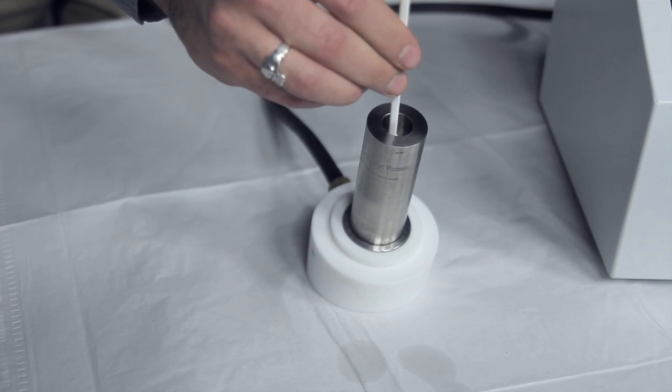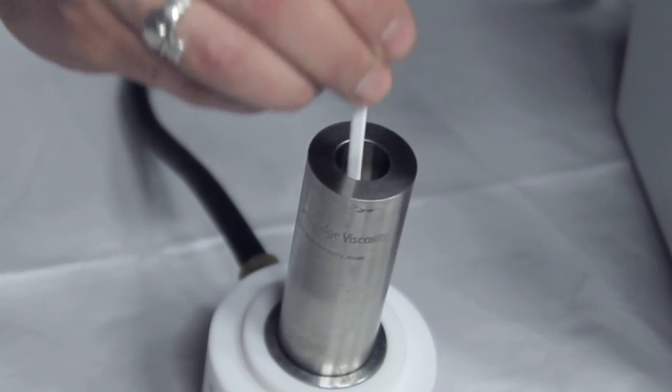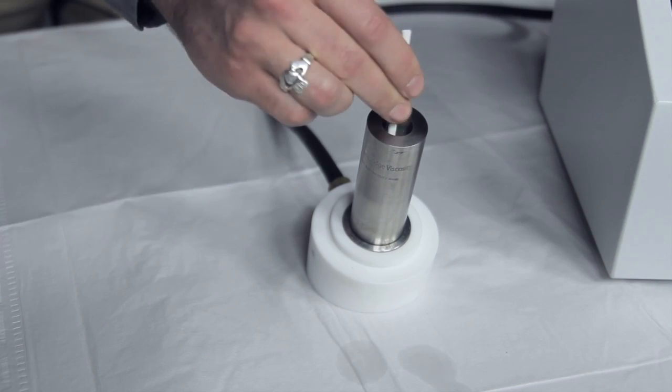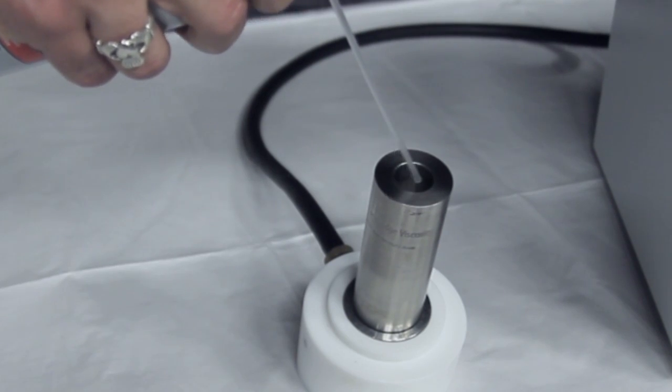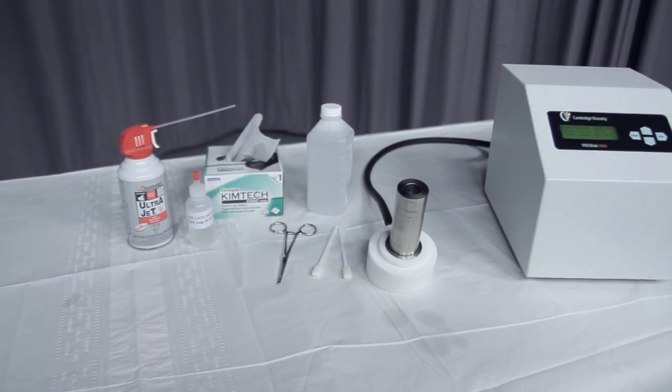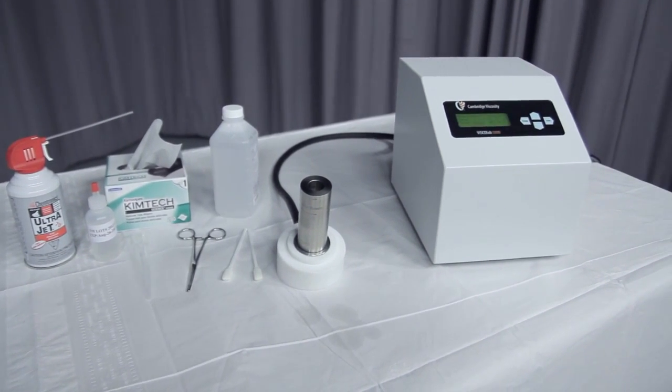Use foam tip swabs to clean the measurement chamber. Repeat as necessary until the chamber is fairly dry. Blow dry the measurement chamber with compressed air. You have now tested a sample and cleaned the measurement chamber of a VISCOlab system.